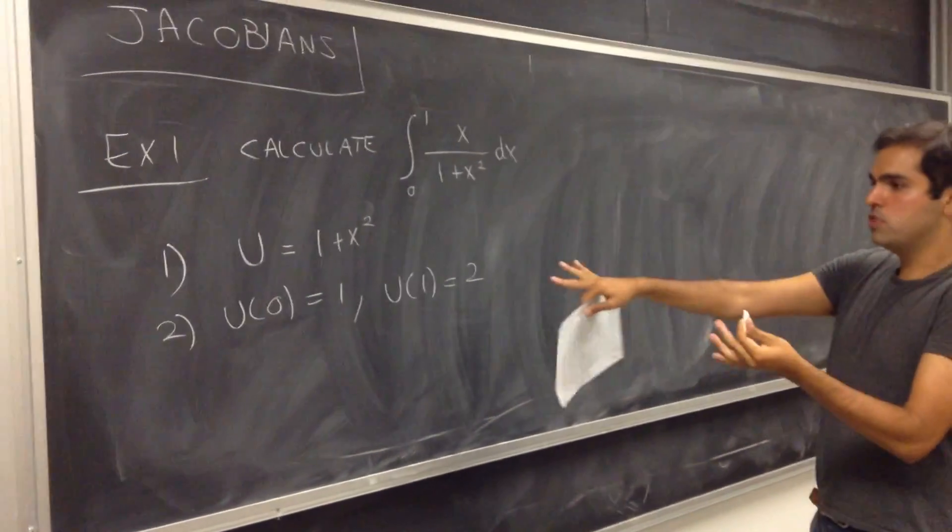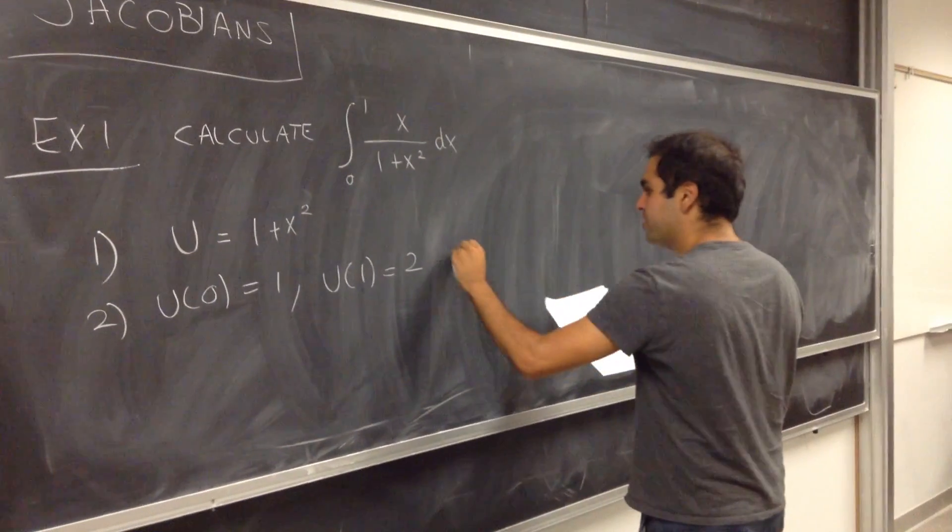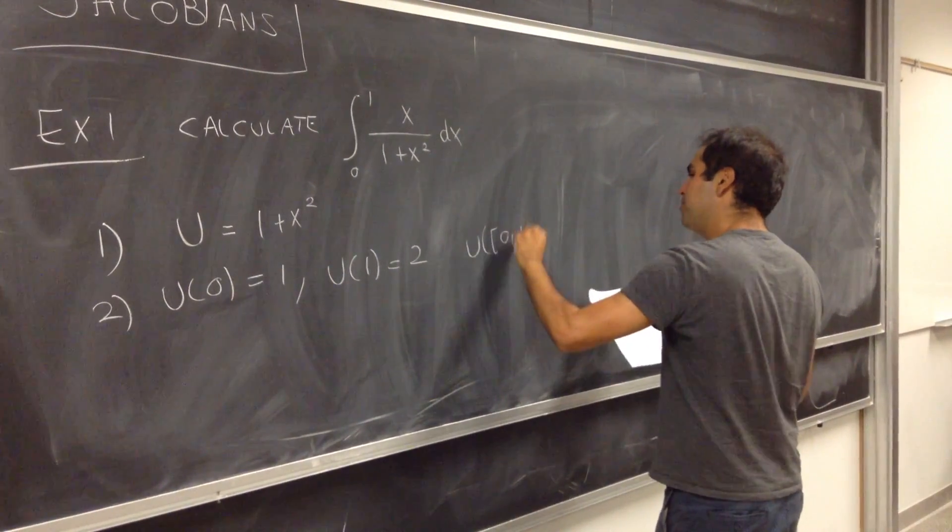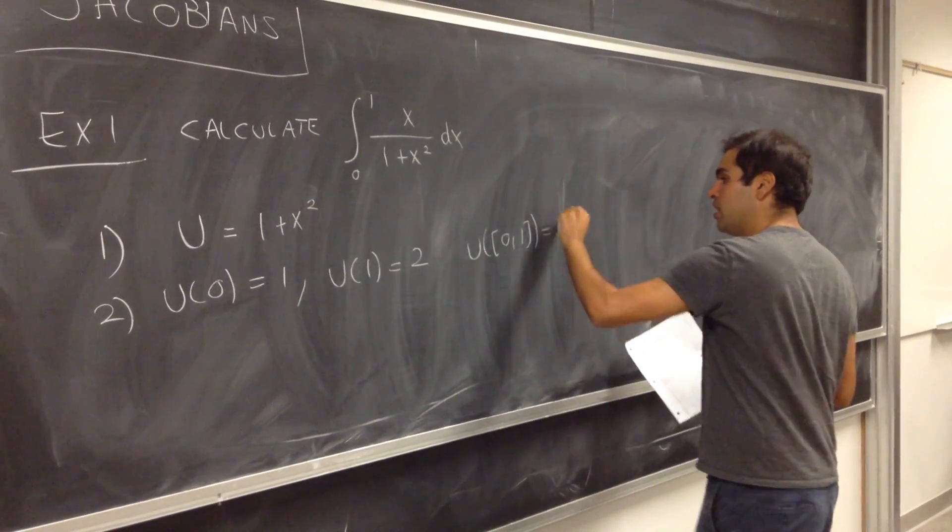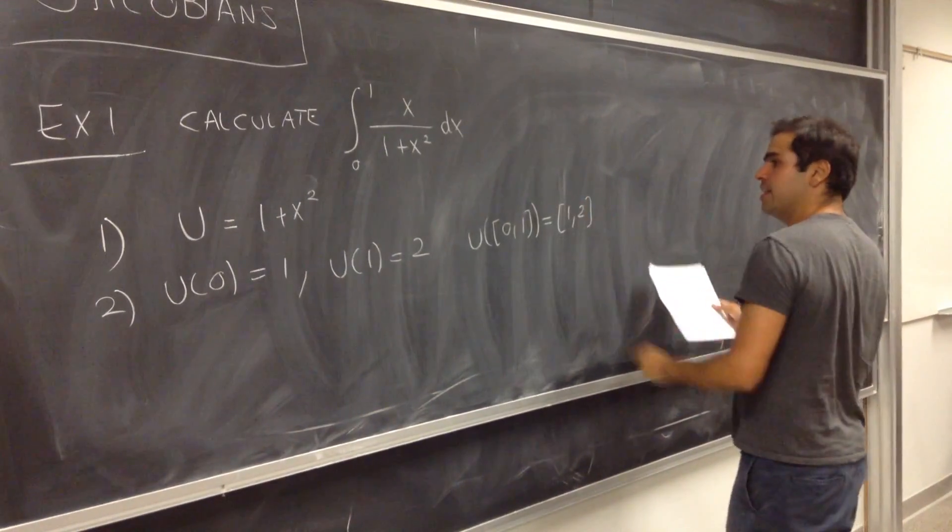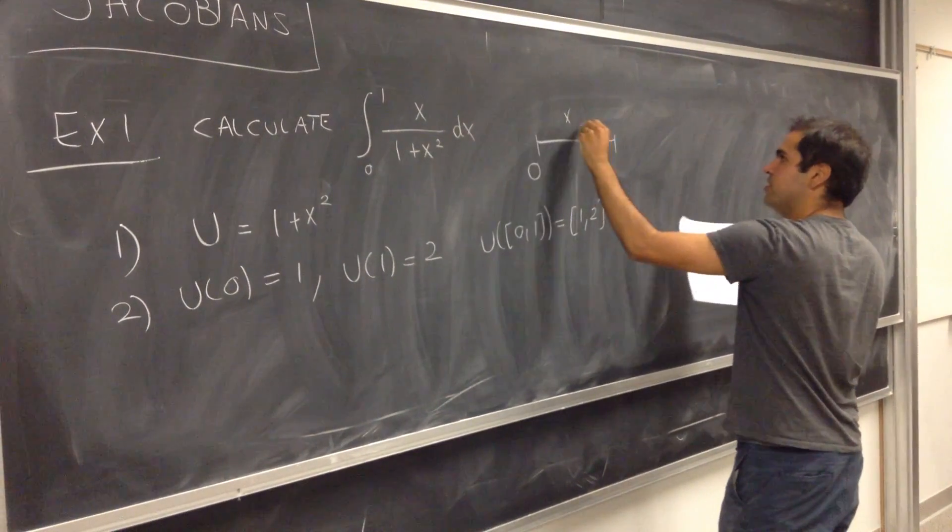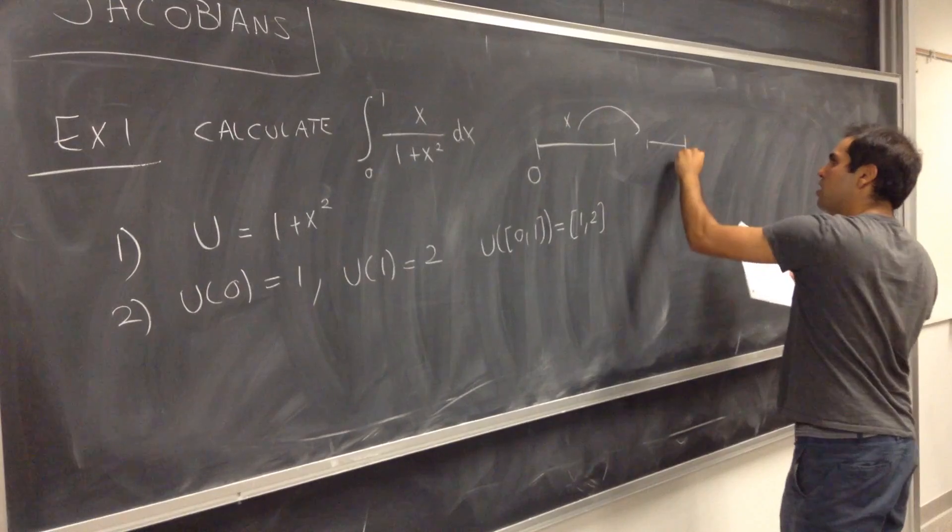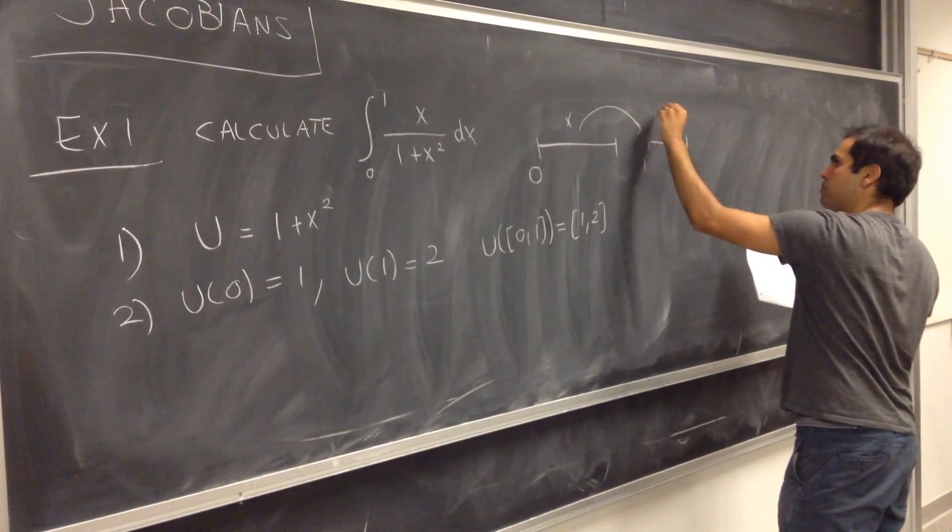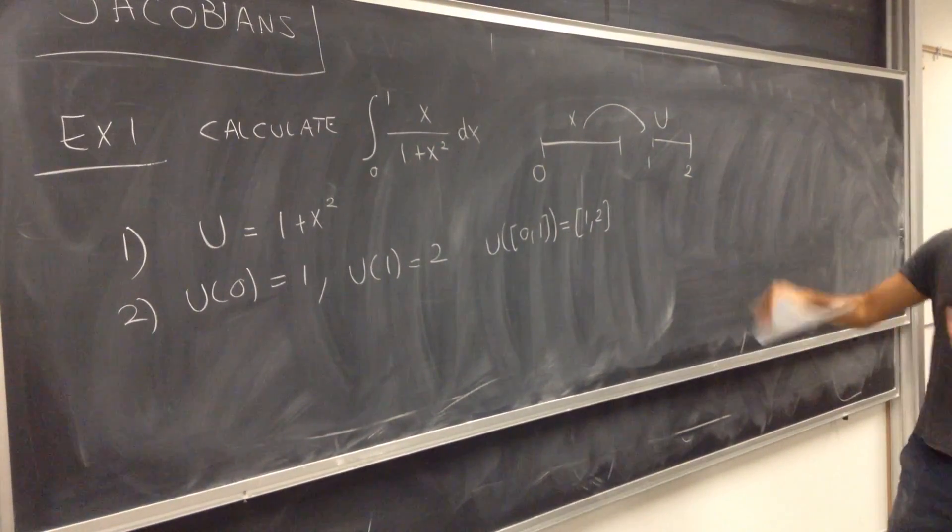So in other words, what does u do? It takes, what u do? It takes the interval 0, 1 and transforms this into the interval 1, 2. So if x is between 0 and 1, then u is between 1 and 2. That's one thing.